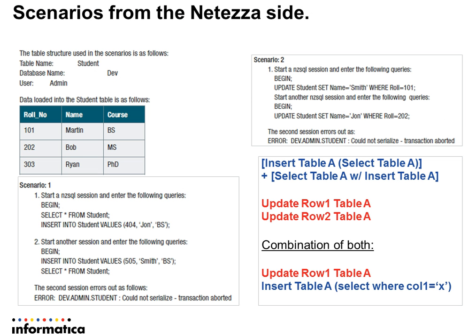Just to go over a couple of scenarios from Netezza — I've got this table here with three records. We'll start with scenario one. I do a select, and then I insert a new value into that table. From a second NZSQL session, or PowerCenter session, I'm going to insert another row, and then I'm going to do a select.